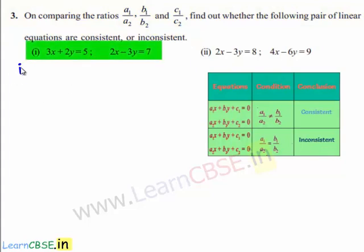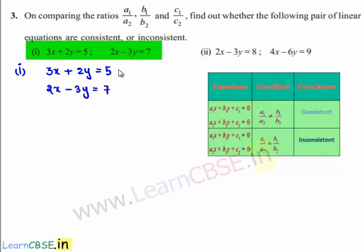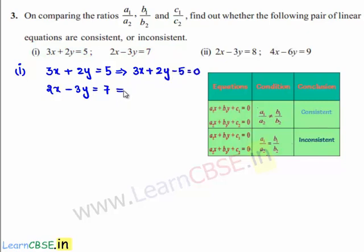The first set of linear equations given is 3x plus 2y is equal to 5 and 2x minus 3y is equal to 7. This equation can be written as 3x plus 2y minus 5 is equal to 0, and the second equation can be written as 2x minus 3y minus 7 is equal to 0.